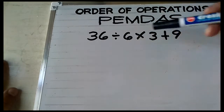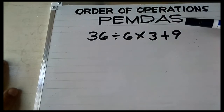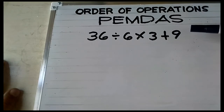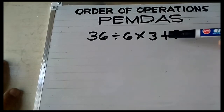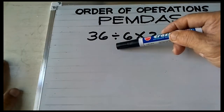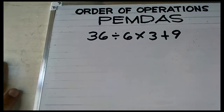Do you have addition? Yes. So since there's no parenthesis or exponent, you need to use the left-to-right procedure. Division comes first because it appears first from left to right. So 36 divided by 6 is equal to 6.